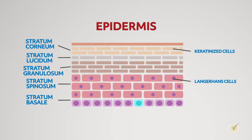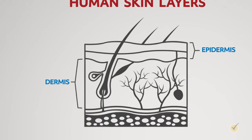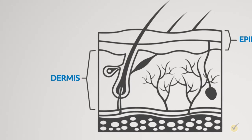Also present in the stratum basale are melanocytes, which are responsible for skin and hair color, and Merkel cells, which are receptors for sensing touch. Below the epidermis is the layer of skin called the dermis. The dermis is composed of connective tissue that gives skin strength and structure. Blood and lymph capillaries present in the dermis bring oxygen and nutrients to the skin and remove waste.